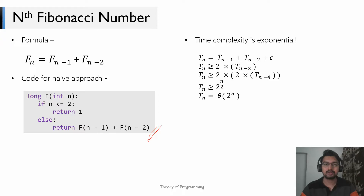Since n−1 is larger than n−2, T(n−1) — the time to compute the (n−1)th Fibonacci number — is greater than T(n−2). So we can state that T(n) is at least greater than 2 times T(n−2). Progressively simplifying, we can write T(n−2) as 2 times T(n−4).